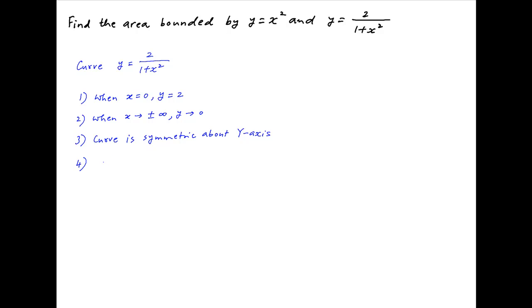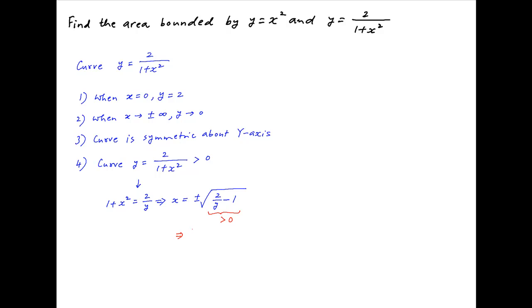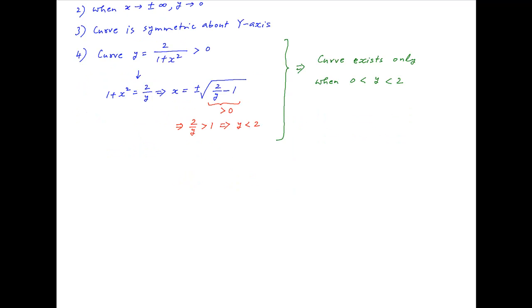Note that for the curve y = 2/(1 + x²), the right-hand side is always positive, so y is always greater than 0. Also, solving 1 + x² = 2/y for x gives plus or minus √(2/y − 1). For this to be real, 2/y − 1 ≥ 0, i.e., 2/y > 1, which implies y < 2. Therefore, the curve exists only when y lies between 0 and 2.